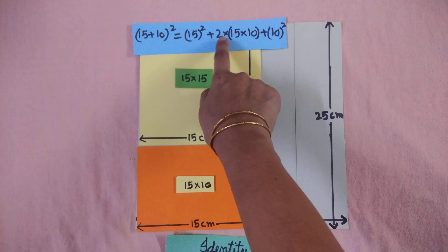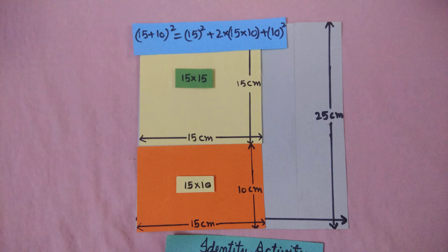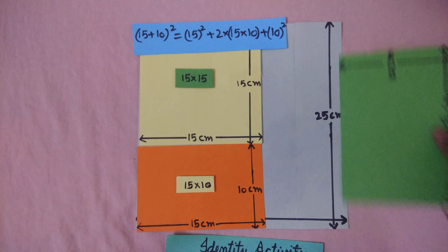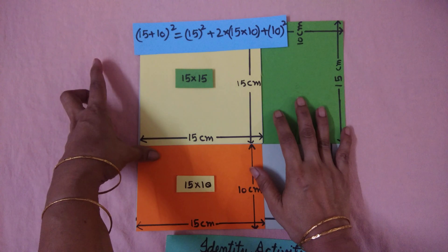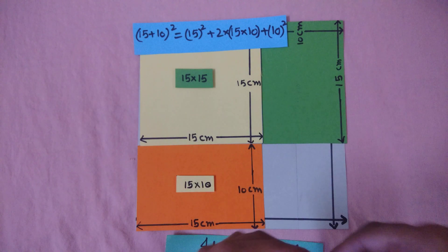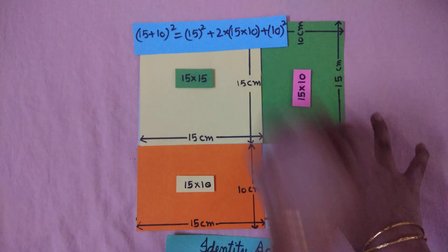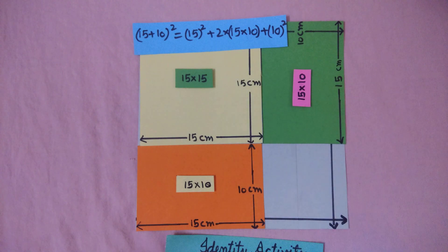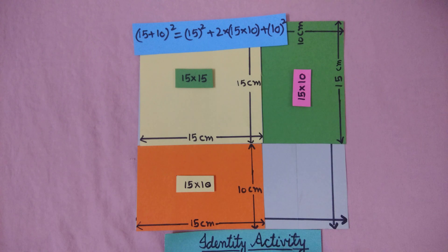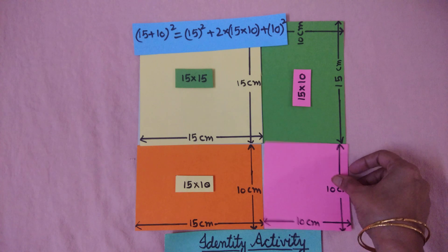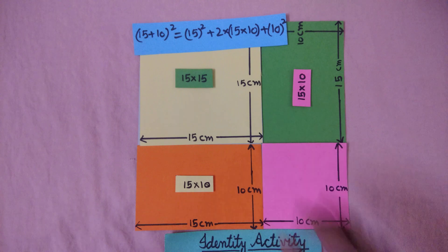Since it is written 2 pieces of 15 by 10, I will take another cutout — another 15 by 10 rectangular piece. And for 10 squared, that means a 10 by 10 square piece. So one more square cutout of 10 by 10.